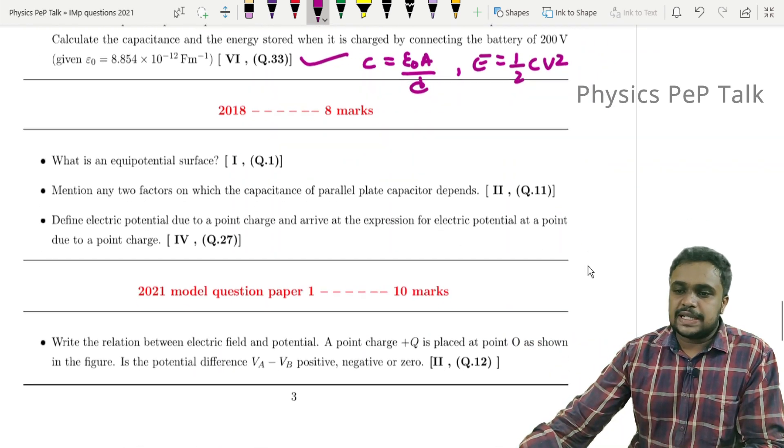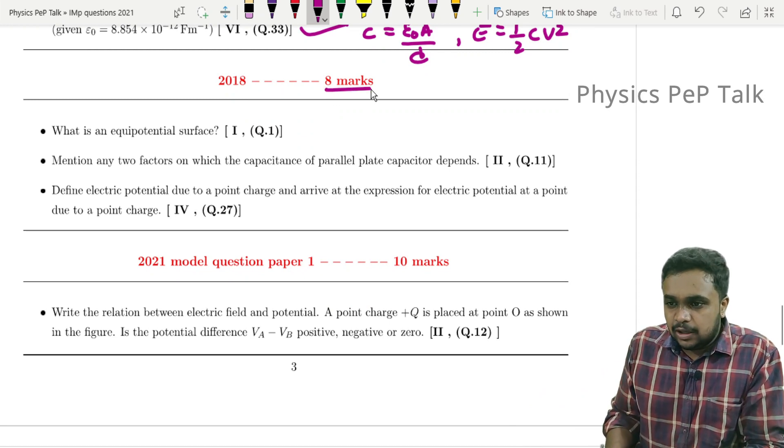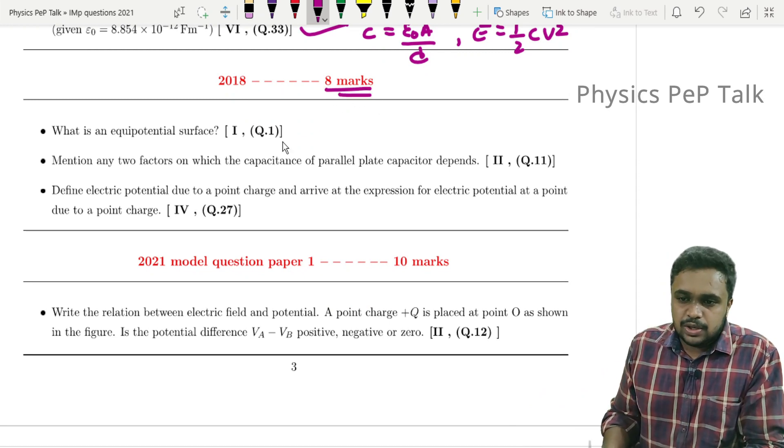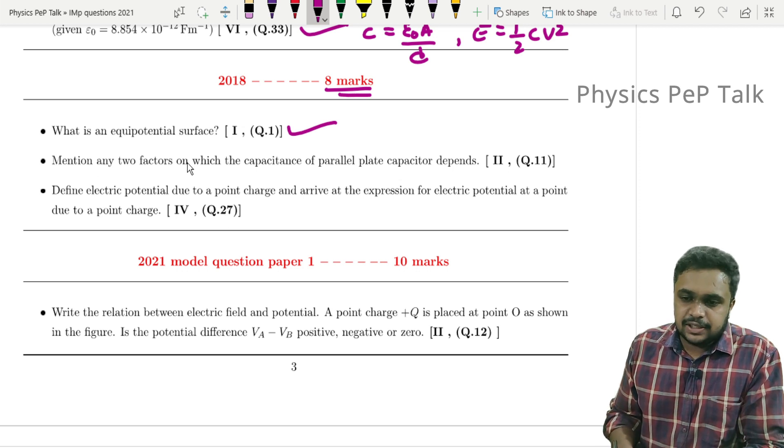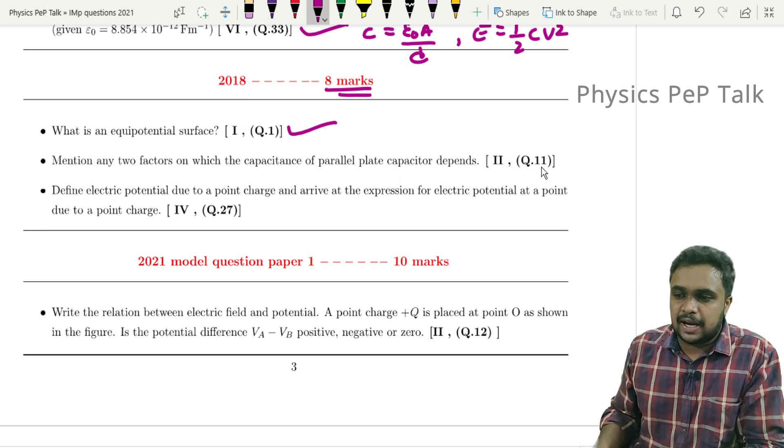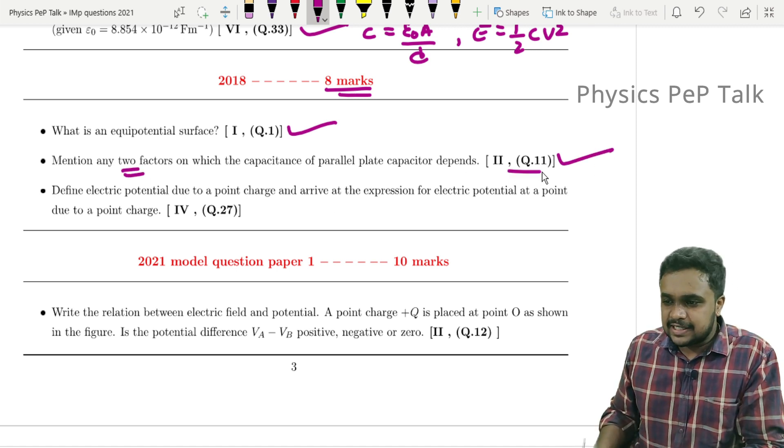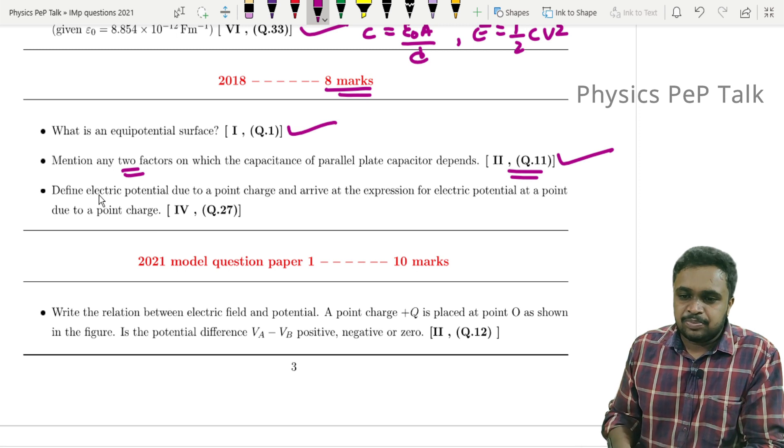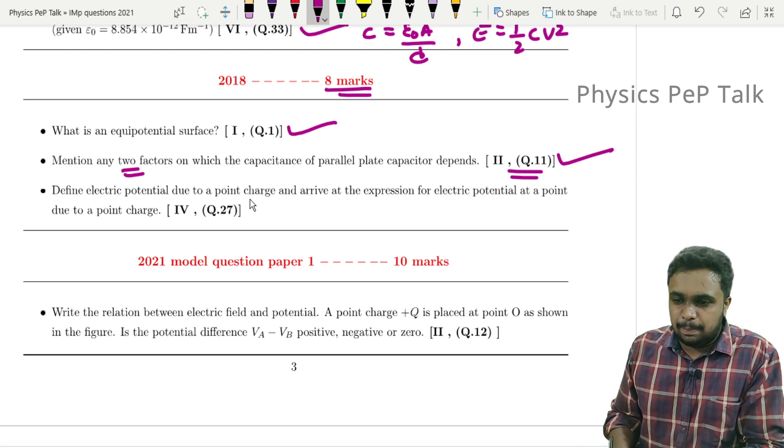Next, 2018 has eight marks total. What is the equipotential surface? This was asked for one mark. Mention two factors on which capacitance of a parallel plate capacitor depends upon - this was asked for two marks.